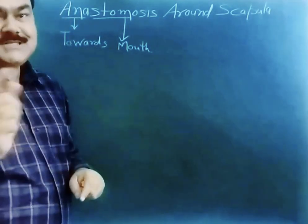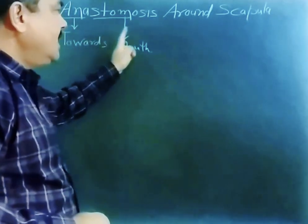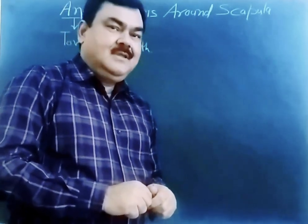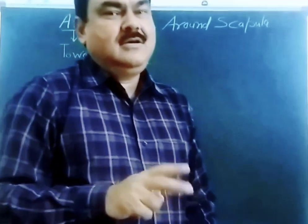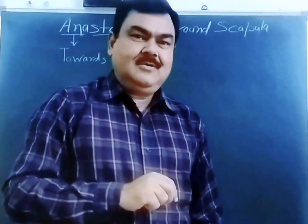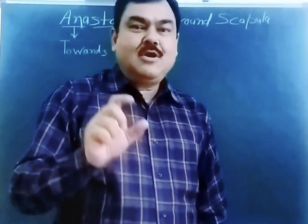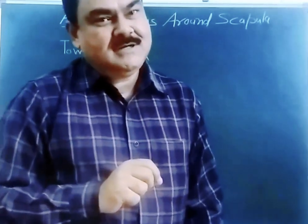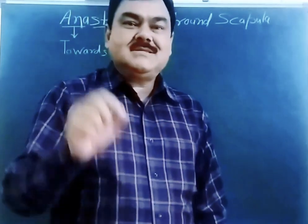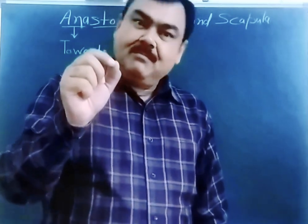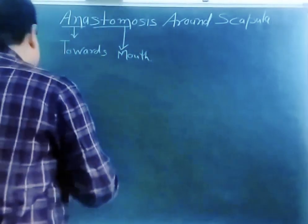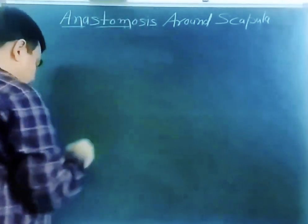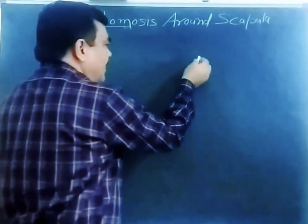Now we'll discuss the anastomosis around the scapula. In the scapula there are two regions where anastomosis takes place: one is around the body of the scapula and the other is around the acromial process. First we'll discuss the anastomosis around the body of the scapula.